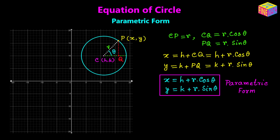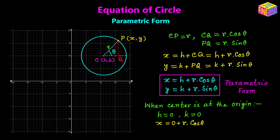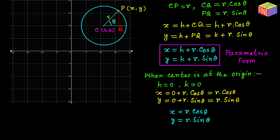Next we are going to see how the parametric form is going to look like if the center of the circle is located at the origin. Well, if the center is located at the origin then the x and y coordinates of the center both will be equal to 0. Then we can say x will be equal to 0 plus R times cosine of theta — in place of H I have put 0 — and that is equal to just R times cosine of theta. And similarly, y will be equal to 0 plus R times sine of theta, and that is equal to just R times sine of theta.